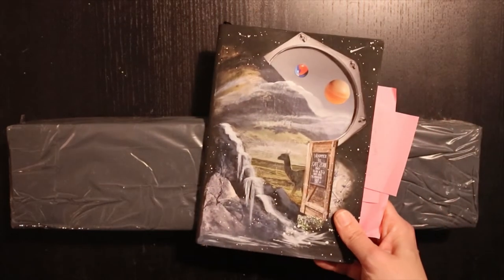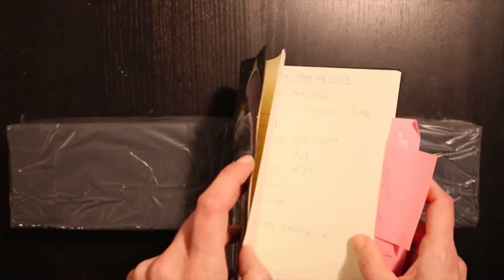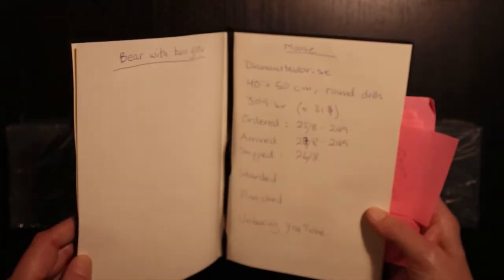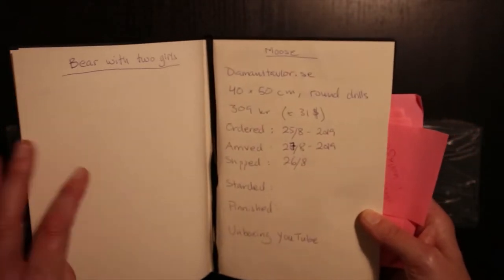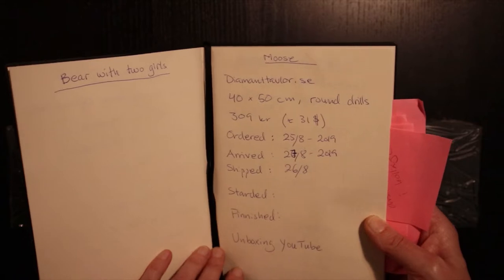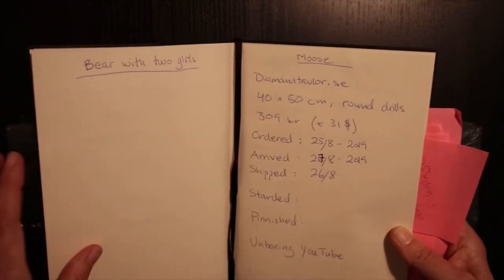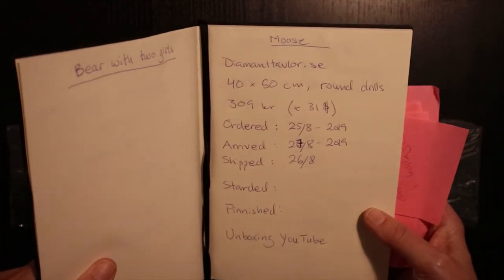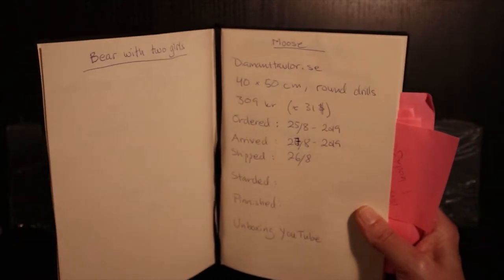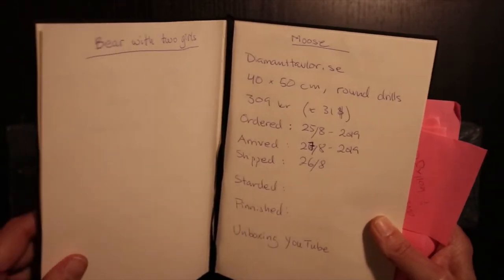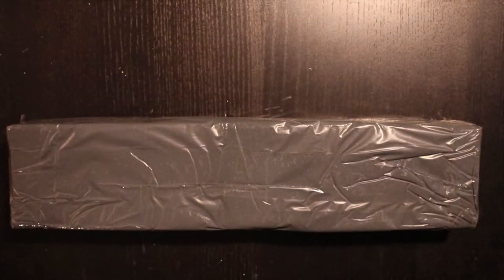Let's see, I will bring out my little notebook and let's see, it's a picture of a moose, it's 40 by 50. I paid 309 Swedish kroners which is about 31 dollars. I ordered it on the 25th of August, it shipped on the 26th and arrived on the 27th.